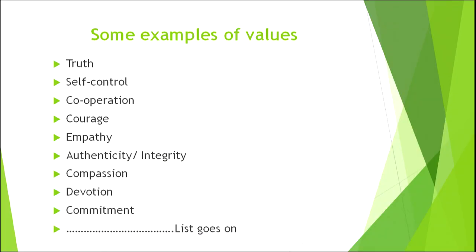There could be many lists of values, and I believe values keep evolving. It is the society and the time in which we live that tells us which values are important. The word itself says 'value' — what we value in today's times is a value. Hence, we cannot have a comprehensive list of values for children. Some examples include self-control, truth, cooperation, courage, empathy, authenticity, compassion, and devotion — this list can expand depending on your context.